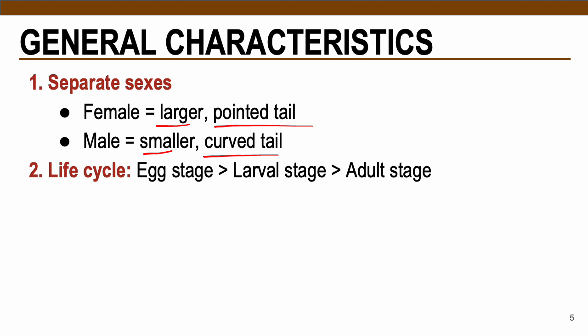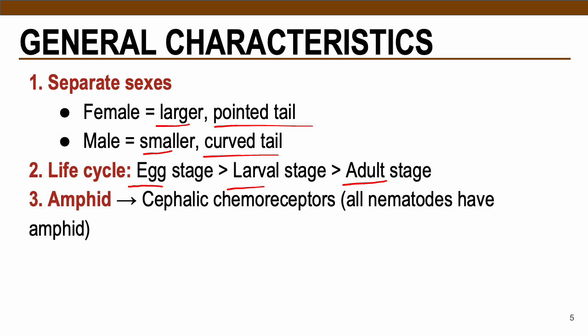When it comes to the life cycle, they contain three morphological stages. Take note: the egg stage, the larval stage (also known as juvenile stage), and the adult stage, which contains the adult female and adult male worms.